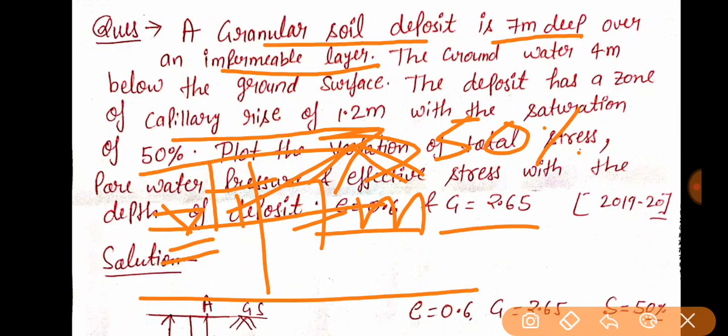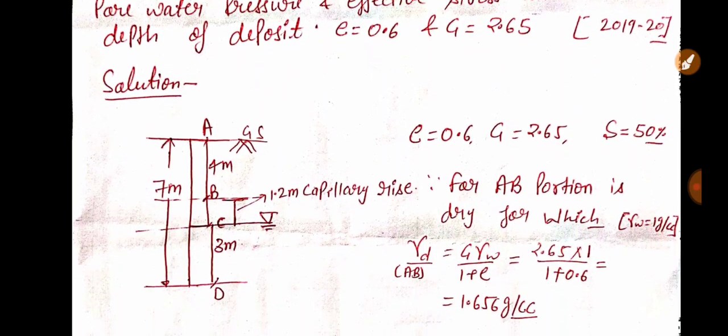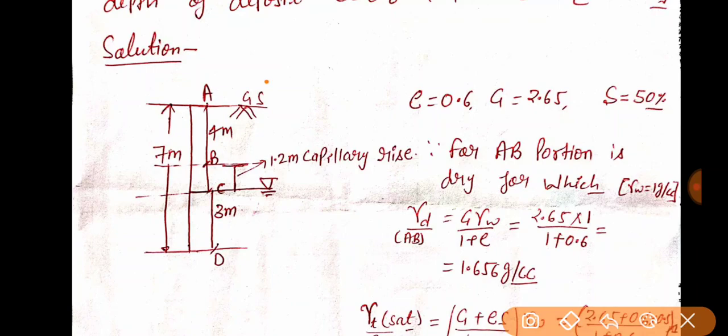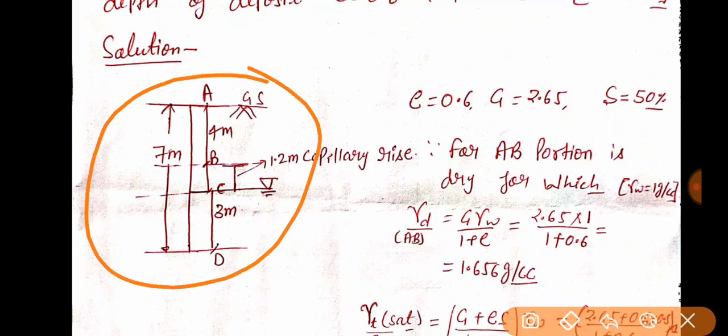So let's start with this solution. Now, what I have said is that after you read the language, you try to draw the figure. If you have tried to draw your diagram, that means 20 to 30 percent work is complete. If you draw the diagram, look at the question — what do we have? There is 7 meters of your granular soil deposit layer, and it exists over an impermeable layer.